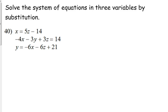So what my eye is immediately drawn to is the fact that that first equation is x equals 5z minus 14. So I'm going to take this expression right here and I'm going to plug it in for x into the last equation because that's going to get that last equation in terms of one variable.